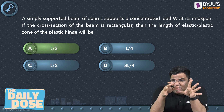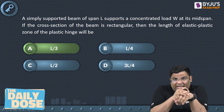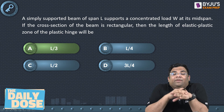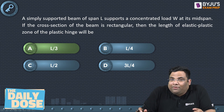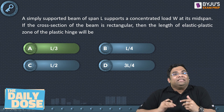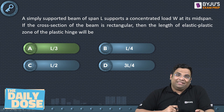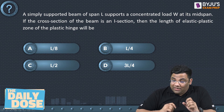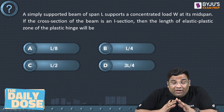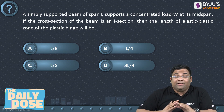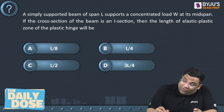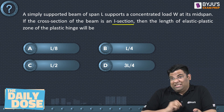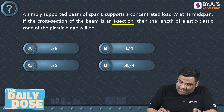That was for a simply supported beam with a point load. For the case of a UDL and other loading cases, all those things are covered in our Bagus Exam Prep app — you can download it and see more videos like this. Now for homework: consider a simply supported beam with a concentrated point load acting at mid-span, but the cross-section is an I-section.